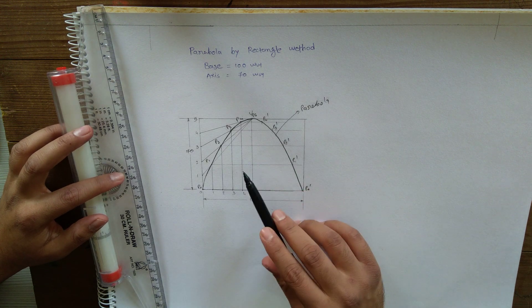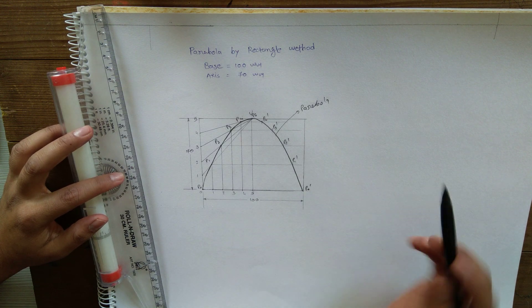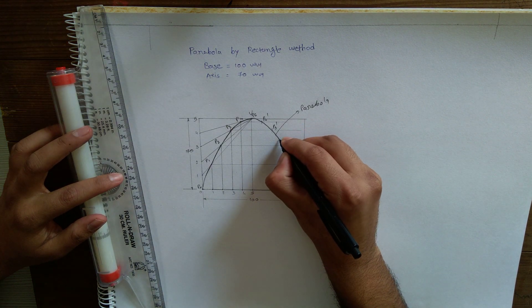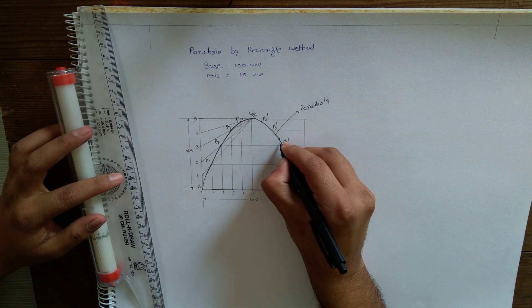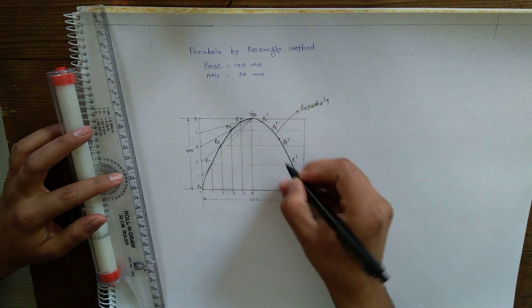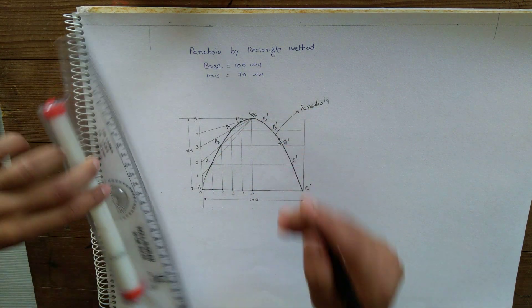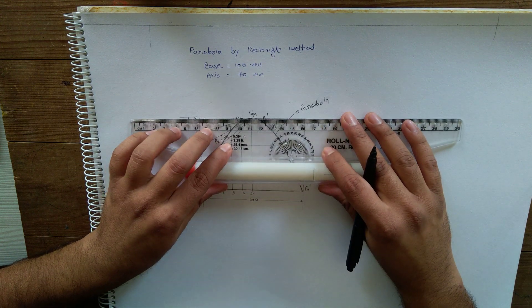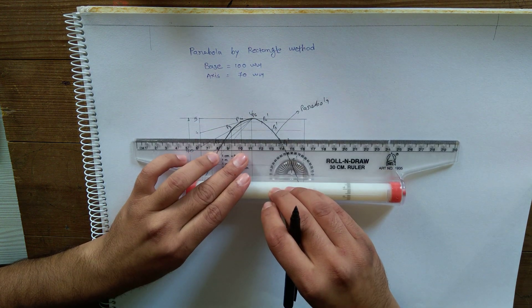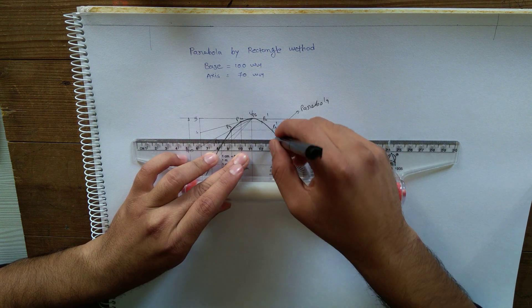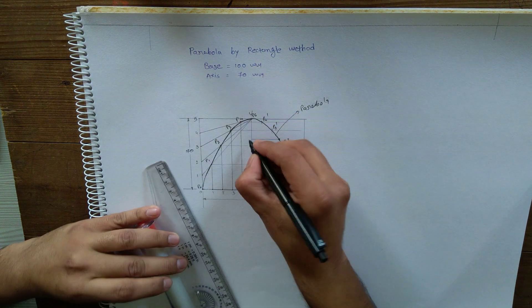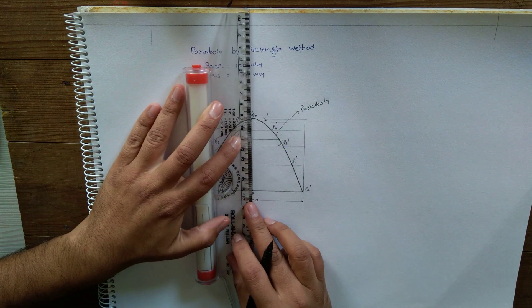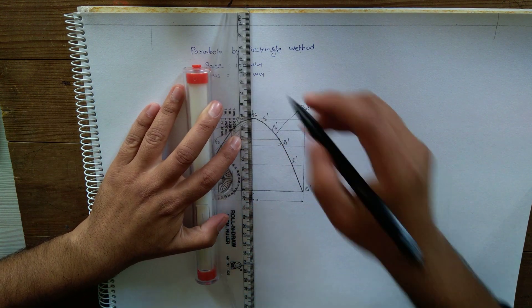To draw tangent and normal to parabola at any point, I'll first take any point on the curve. From this point, draw one line parallel to base up to the axis. Mark this point as X and also extend